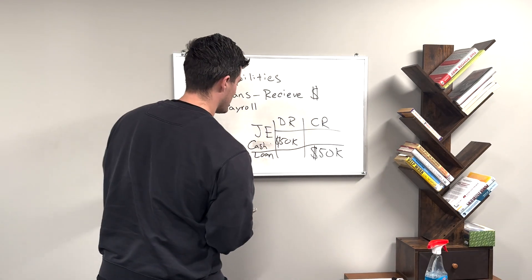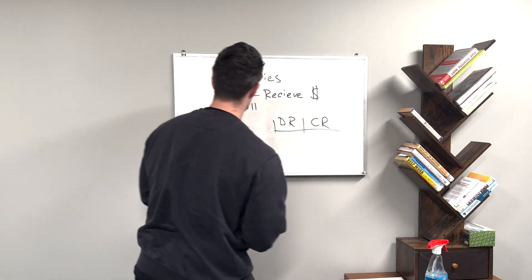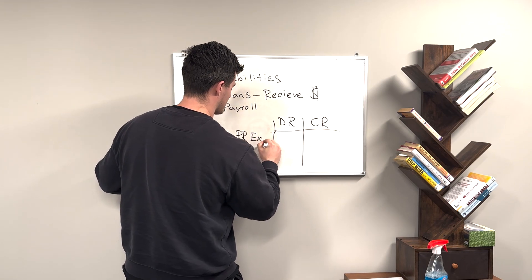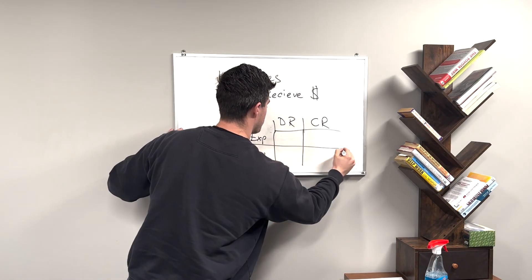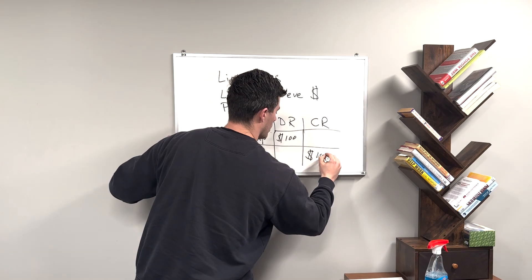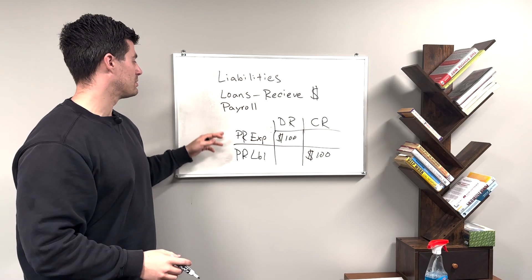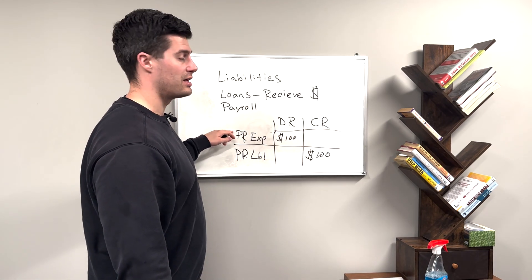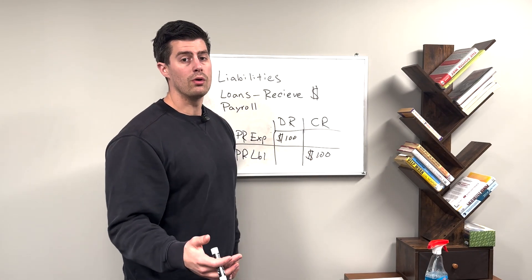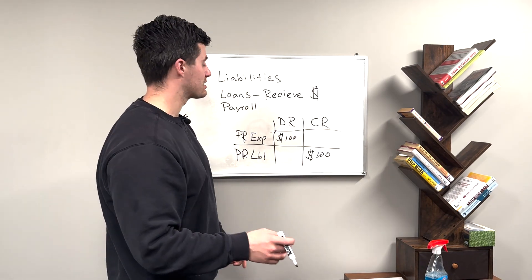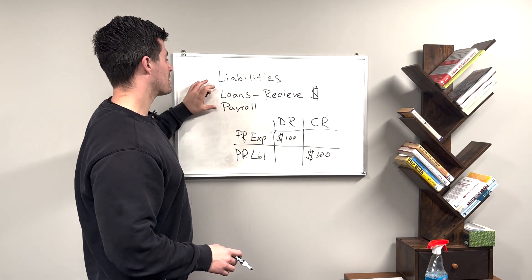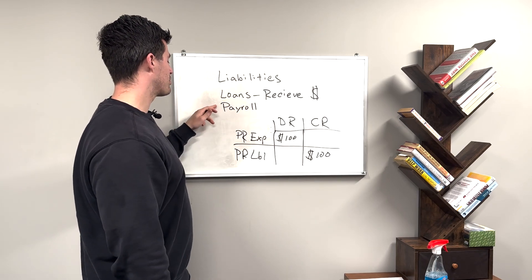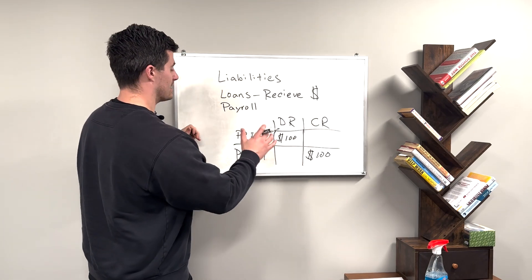Payroll also requires a journal entry. Typically we have a payroll expense and a payroll liability. For example: payroll expense one hundred dollars, payroll liability one hundred dollars. You pay your employees payroll wages, and you have a hundred dollar expense for payroll tax and also a hundred dollar liability because you owe either the state or federal government that hundred dollars in the form of payroll tax. You haven't paid it yet, but the expense has been incurred. Liabilities as you can see can get very complicated very quickly.